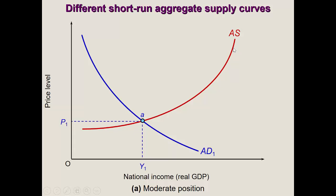Notice that the aggregate supply curve, instead of being uniformly elastic, becomes more inelastic from a certain point onwards, while it is elastic below the equilibrium point. So we start with an equilibrium point at Y1 and P1 — this is national income or real GDP — at point A. The Y-axis shows the price level, which is an aggregate price index for all goods and services produced in the economy.